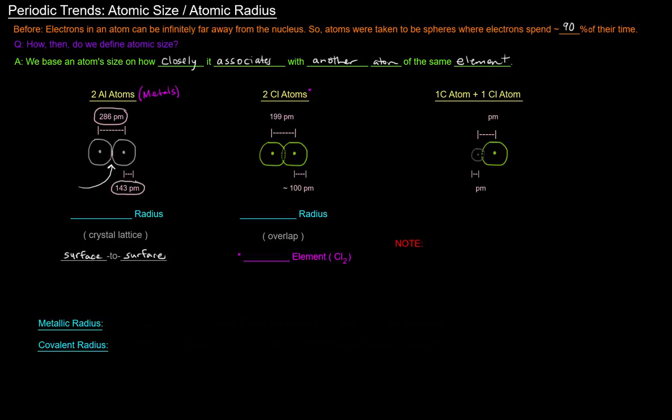And so this is specifically the metallic radius. The metallic radius is defined as half the distance between the nuclei of adjacent atoms in a crystal of that metal element.